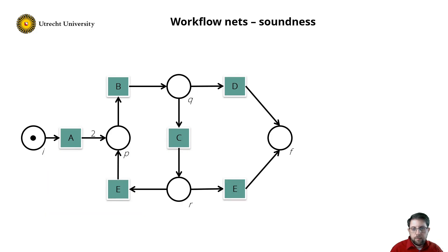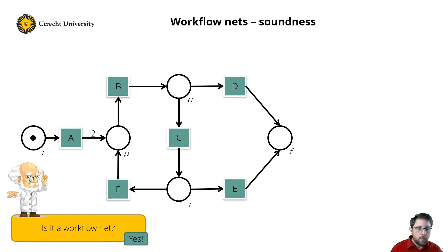Now consider this net. Instead of having one transition d, I now have a transition d and e. Is it a workflow net? Well, yes, everything is still on a path. Is it sound?